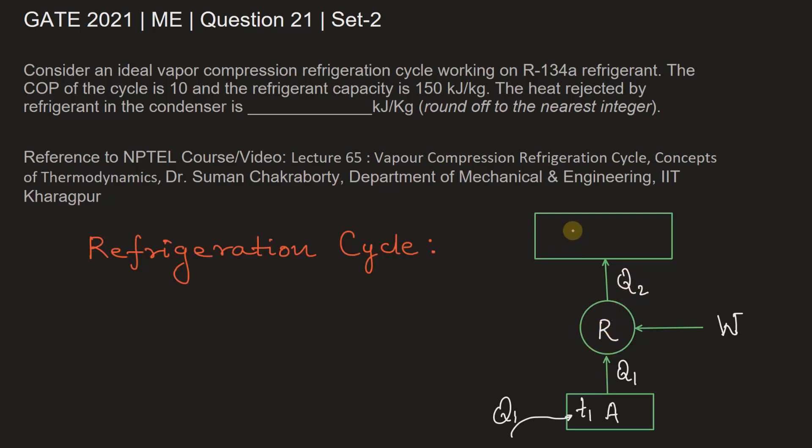The refrigerant rejects heat in the atmosphere. Let's say this is atmosphere ATM at temperature T2, which is also the ambient temperature Ta. T1 is always less than Ta - that's the concept of refrigeration cycle.